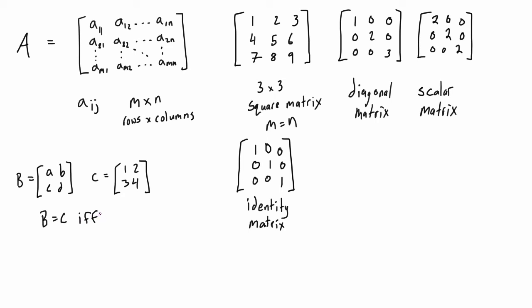We would say that B equals C if and only if A equals 1, B equals 2, C equals 3, and D equals 4. That should be pretty obvious—as long as A equals 1, B equals 2, C equals 3, and D equals 4, then these two would obviously be the exact same matrix.